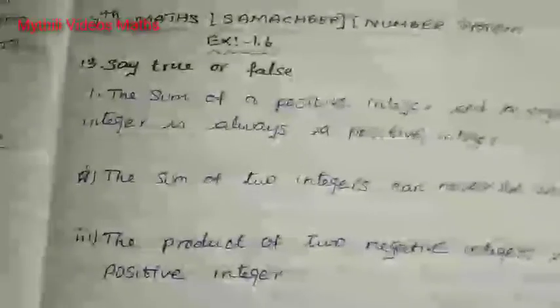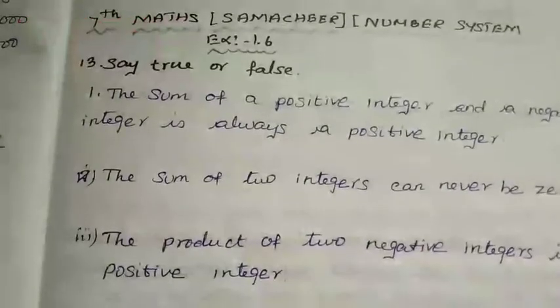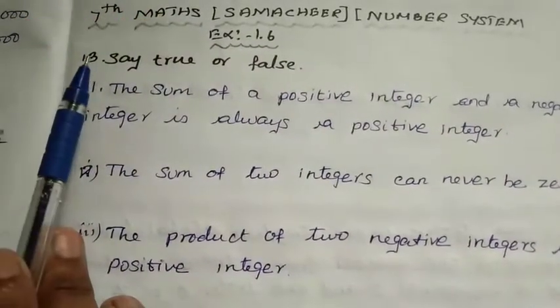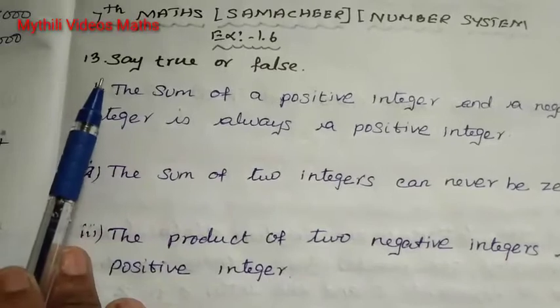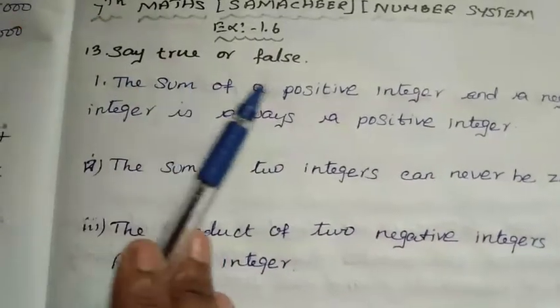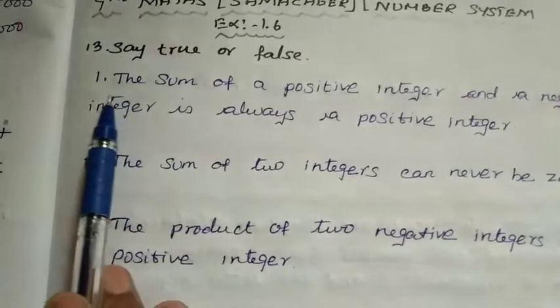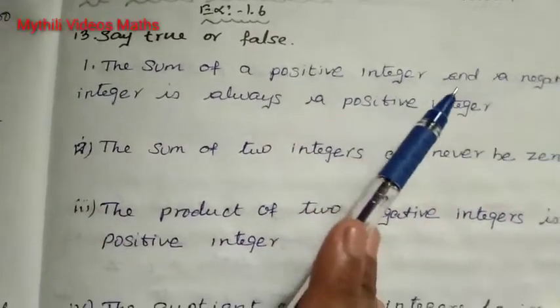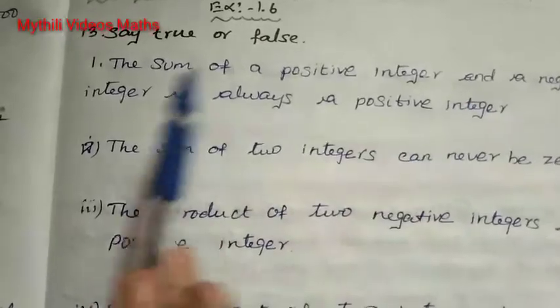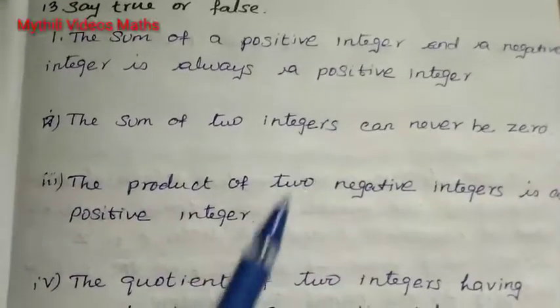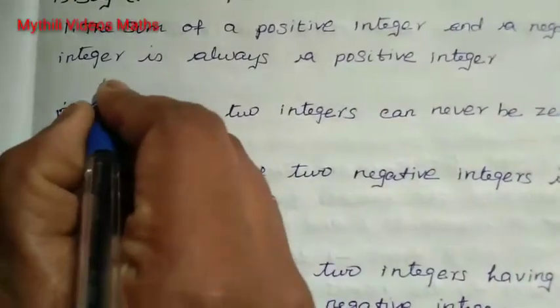Hi students, this is 7th Maths. In the Number System chapter, we have already completed 12 sums. Now we have to see the 13th sum. Say true or false. First question: the sum of a positive integer and a negative integer is always a positive integer.